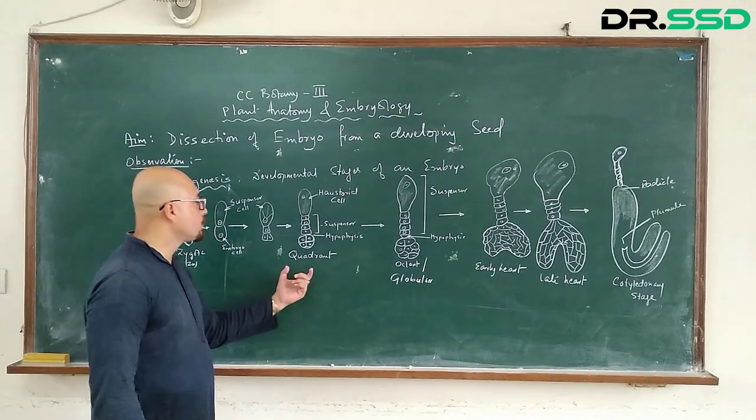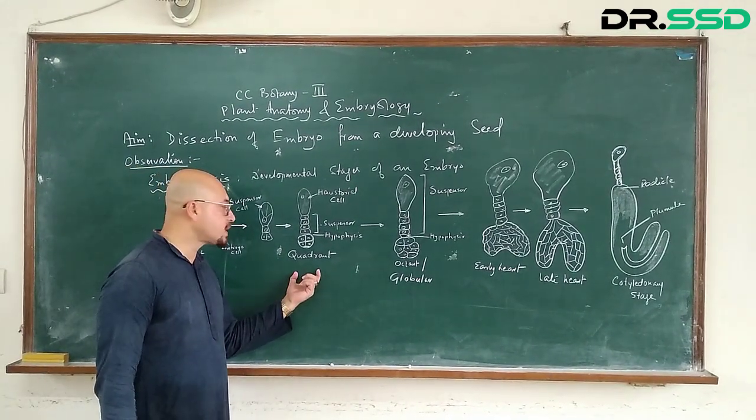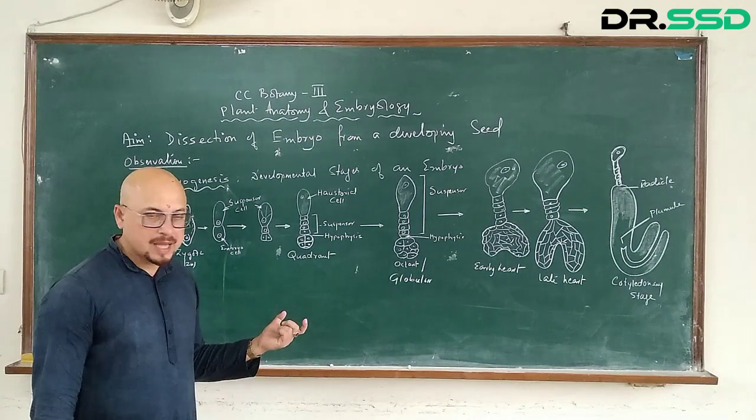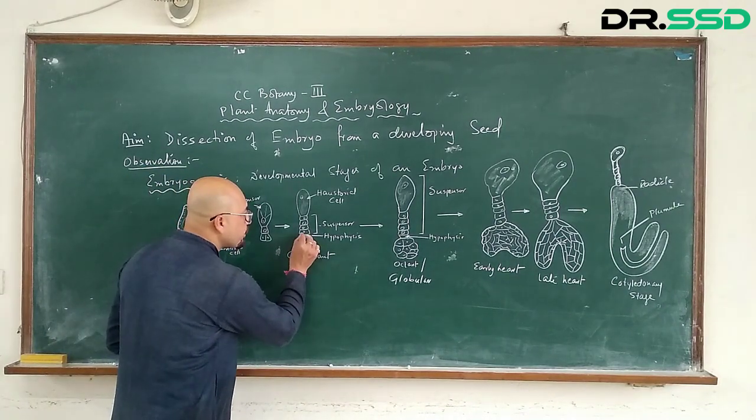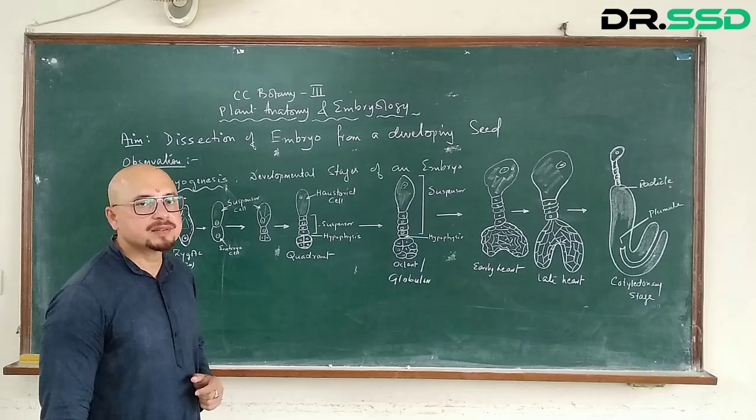The embryo has become four cell, so therefore it becomes the quadrant. And just on top of the embryo is the hypophysis.